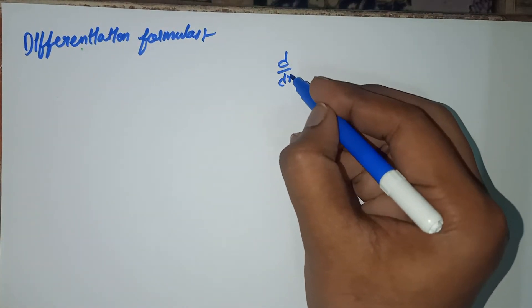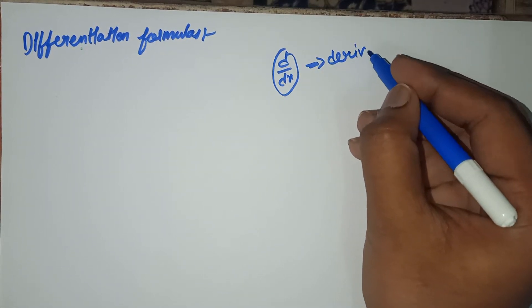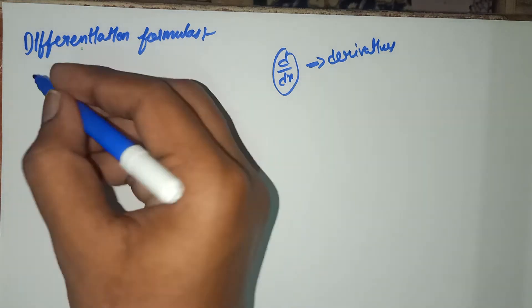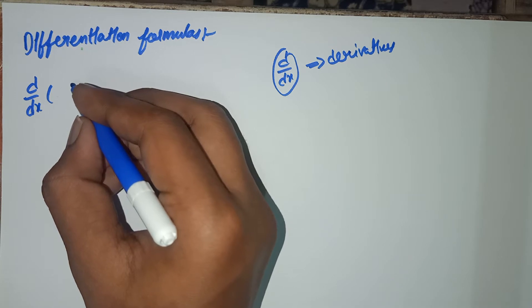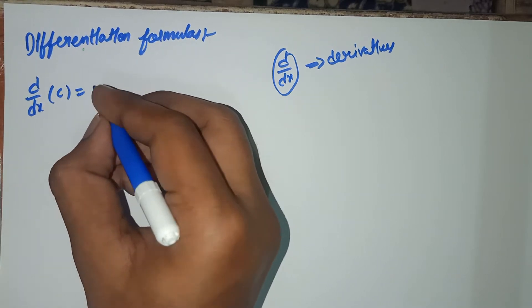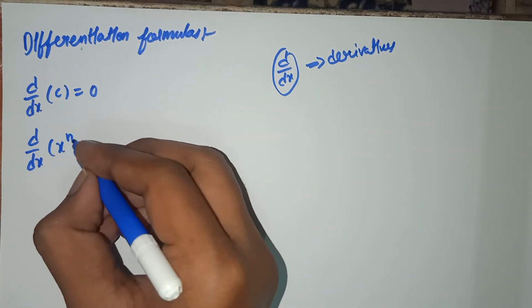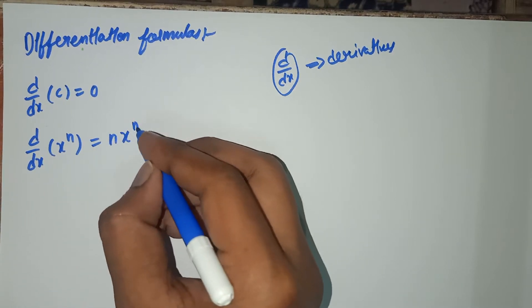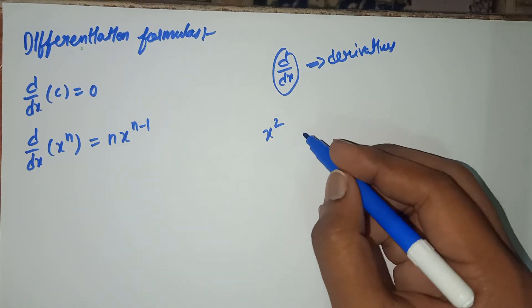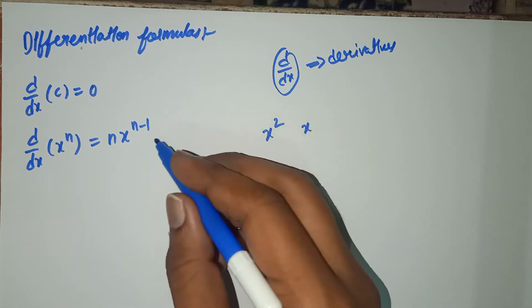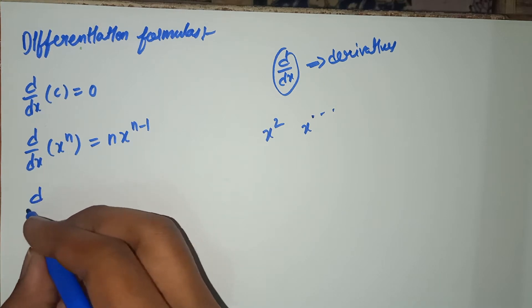Okay, d by dx — we call this as derivative. Derivatives: d by dx of any constant number — one thousand, hundred, one lakh, ten lakh — is equal to zero. And d by dx of x power n is equal to n into x power n minus one. Remember this one. If you put x power two, or x power infinity, you can use this formula. Any value you can put here.